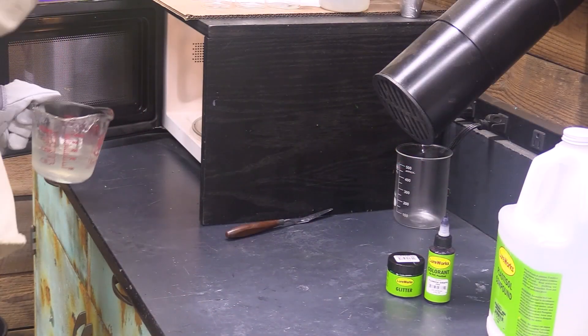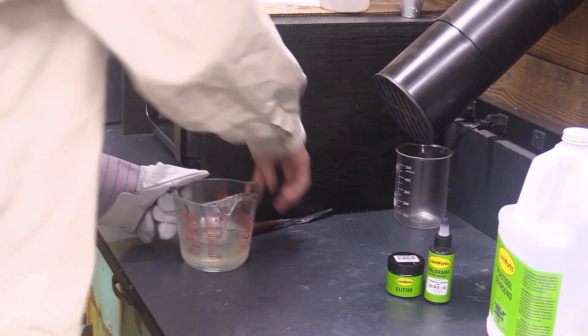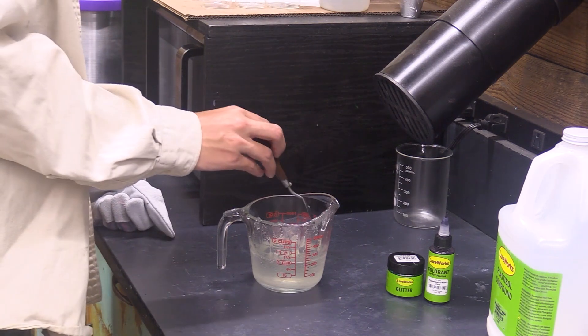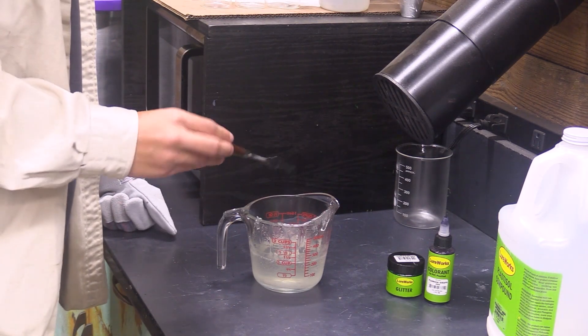After about two and a half minutes in the microwave the plastic is done. We're in a well-ventilated area as you can see. If you don't have a system like this, an outside garage would work or even a porch.